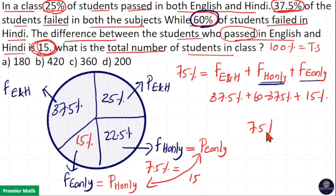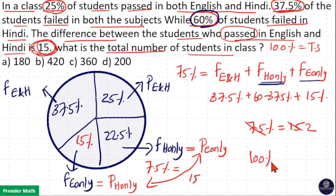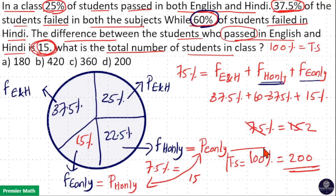Since 7.5% equals 15, that means 1% equals 2, so 100% — the total number of students — equals 200. Therefore, the total number of students is equal to 200. Option D is your answer.